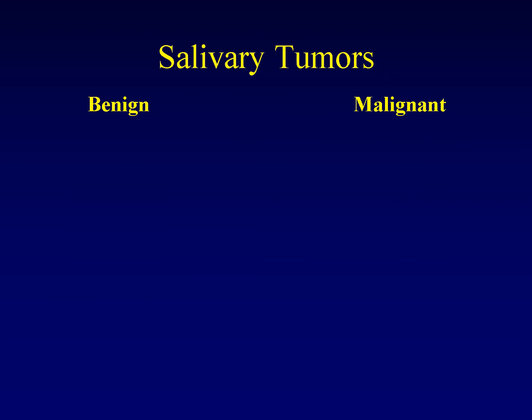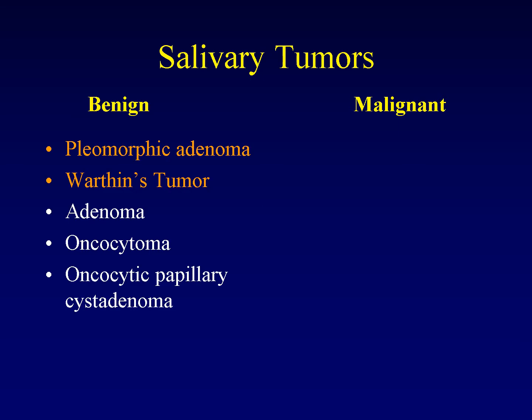Benign tumors that affect the salivary glands include pleomorphic adenoma, Warthin's tumor, benign monomorphic adenomas, oncocytomas, and oncocytic papillary cyst adenomas. Of these, the two most common by far are pleomorphic adenoma and Warthin's tumor. Pleomorphic adenoma is so common that it accounts for 80% of the benign tumors in the salivary gland.